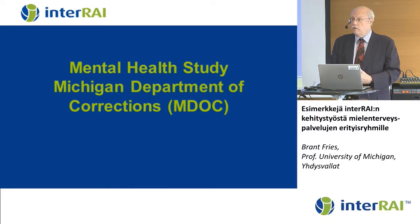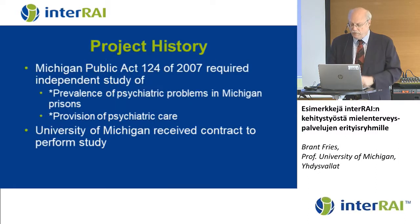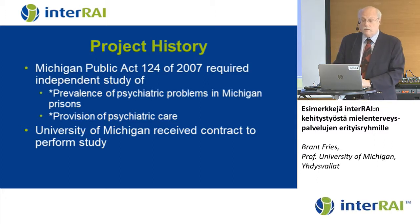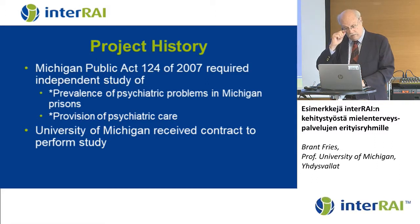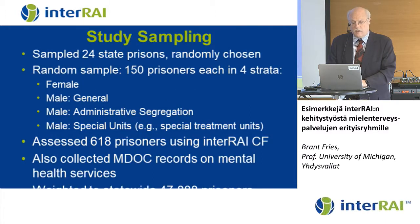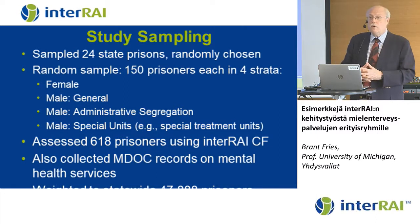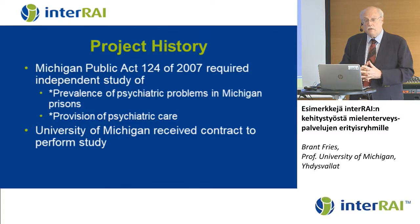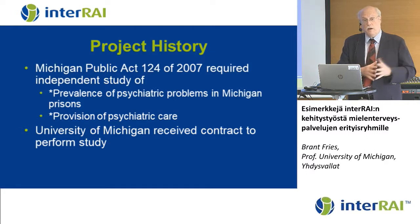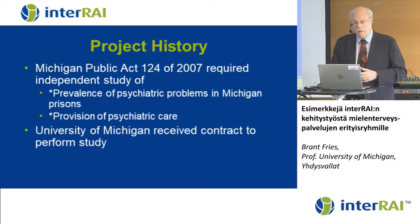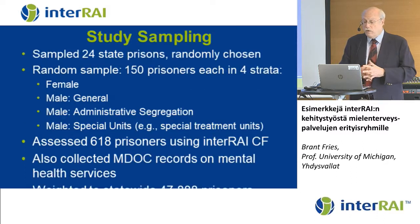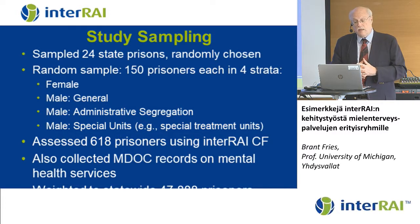Let me talk about the use we made of this instrument in a study of the Mental Health Department of Corrections in the State of Michigan. There was a public act in 2007 that required an independent study to look at the prevalence of psychiatric problems in Michigan prisons and how that matched with the provision of psychiatric care. We received a contract to examine the relationship between those two. We sampled 24 state prisons, randomly chosen, picking 150 prisoners in each of four strata.